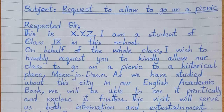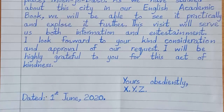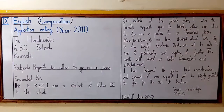Then change the paragraph and start the body: 'On behalf of the whole class, I wish to humbly request you to kindly allow our class to go on a picnic to a historical place. As we have studied about the city in our English academic book, we will be able to see it practically and explore it further. This visit will serve us both information and entertainment.' Change paragraph for closing, then skip one line and start the ending: 'Yours obediently, X.Y.Z.' — then write the date: 1st January 2020.